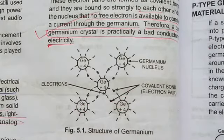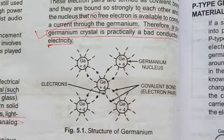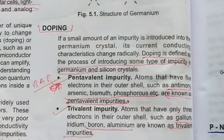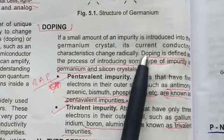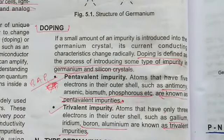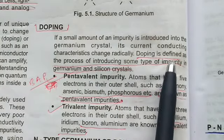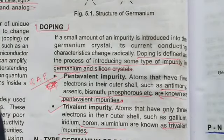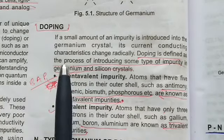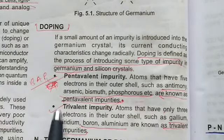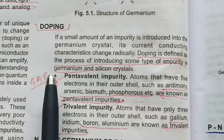When a small amount of impurity is introduced in a germanium crystal, its current conducting characteristics change rapidly. Doping is defined as the process of introducing some type of impurity in germanium and silicon crystals, which are semiconductors. The outer shell contains four electrons in both germanium and silicon.